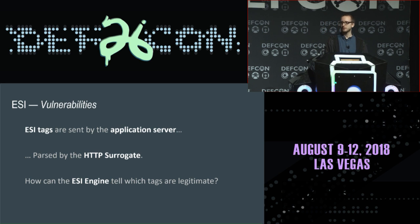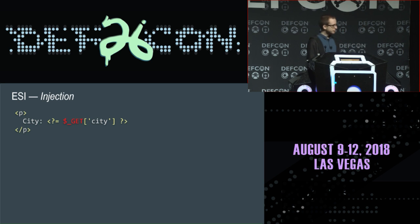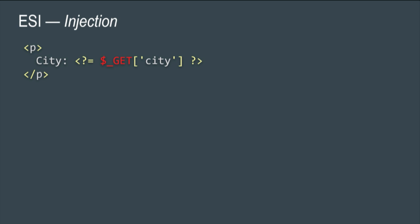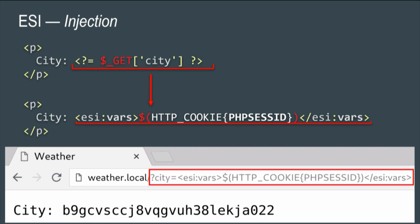Think about cross-site scripting — it's basically the same thing, except we're not exploiting browsers. The answer is: it can't. You're able to inject ESI tags and do basically whatever you want with the cache server. For example, you can echo the city GET parameter in the HTTP response and put an ESI variable pointing to the user's PHP session ID — an HTTP-only cookie that JavaScript cannot access — and effectively leak a session cookie to take over the account.